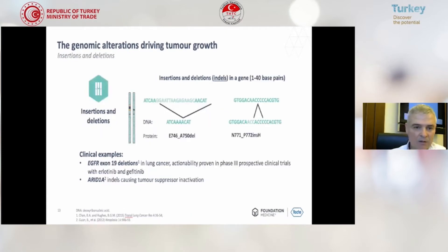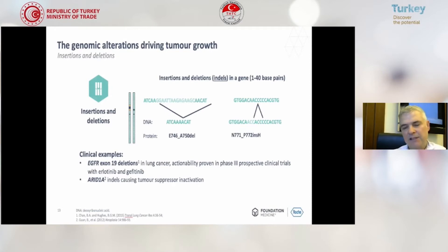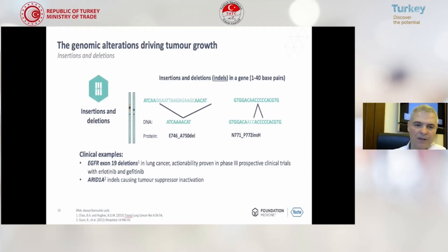Another example is called insertion and deletion mutations. For example, EGFR exon 19 deletions in lung cancer are actionable — we can target this mutation with specific drugs called erlotinib and gefitinib.